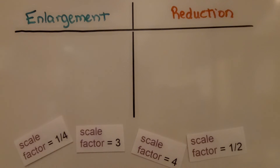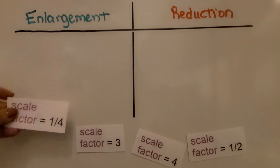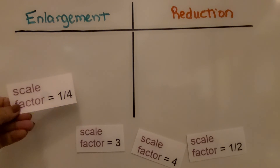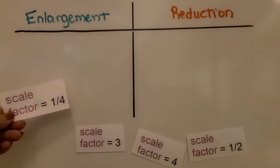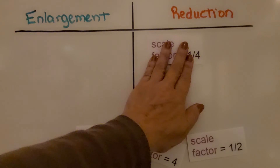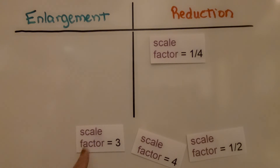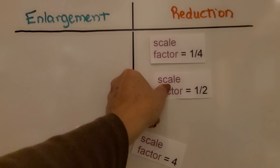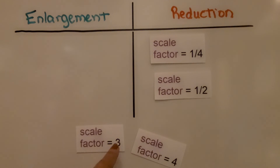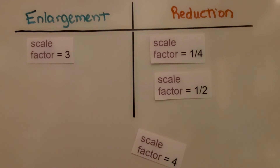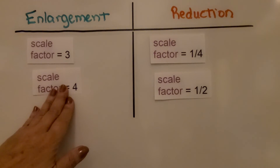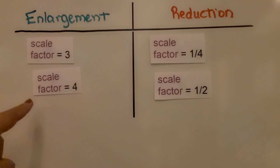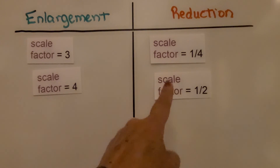Let's put these scale factors into the correct category — enlargement or reduction. A scale factor of 1 fourth: when the scale factor is less than 1, the dilation is a reduction, so 1 fourth is a reduction. Similarly, 1 half is less than 1, so that's also a reduction. A scale factor of 3: when the scale factor is greater than 1, the dilation is an enlargement. And 4 is greater than 1, so that's an enlargement too. Remember: greater than 1 is an enlargement, less than 1 is a reduction.